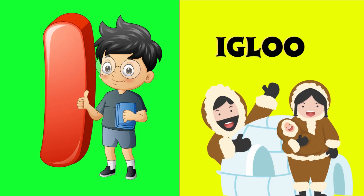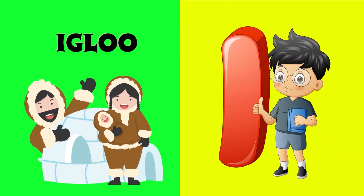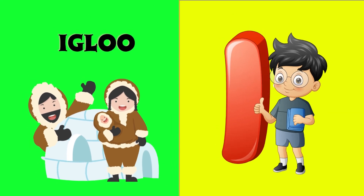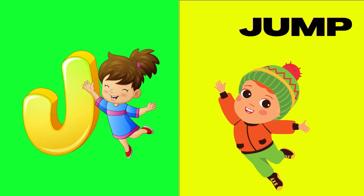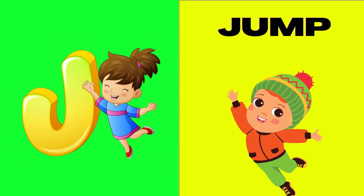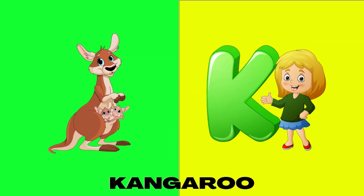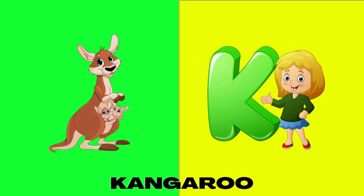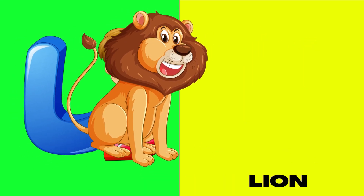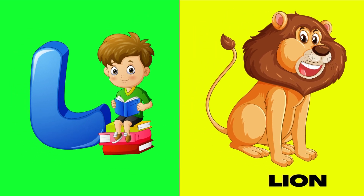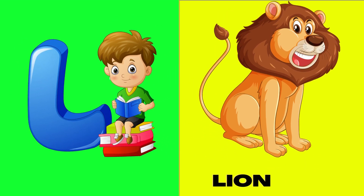I is for igloo, i-i-igloo. J is for jump, j-j-jump. K is for kangaroo, k-k-kangaroo. L is for lion, l-l-lion.